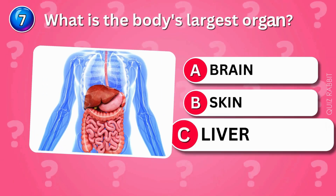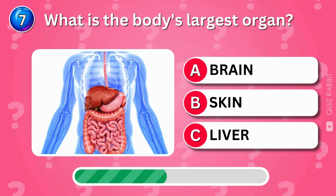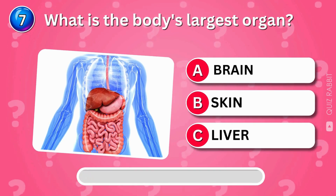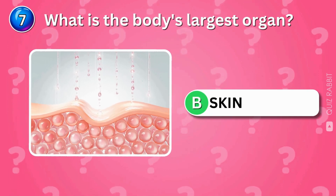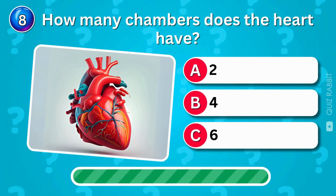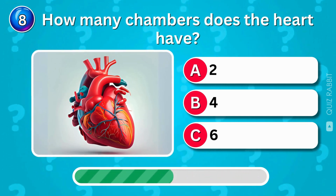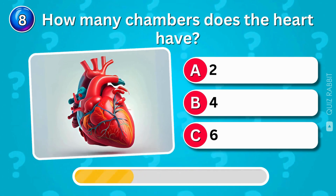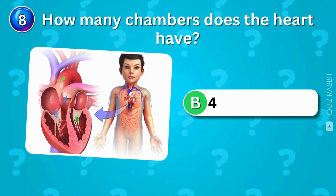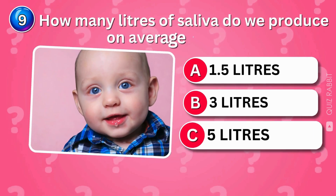What is the body's largest organ? Skin — it protects us from the outside world. How many chambers does the heart have? The heart has four chambers, pumping tirelessly to keep you going.